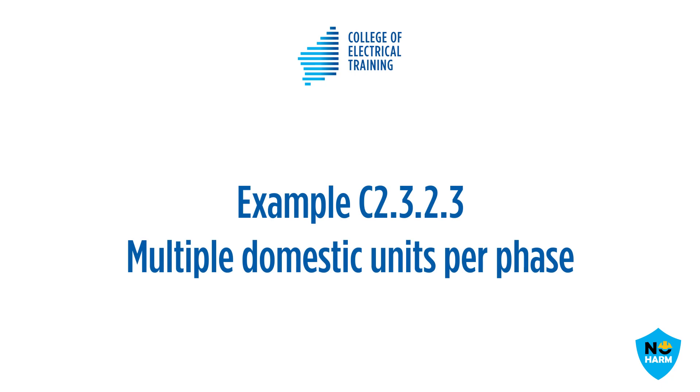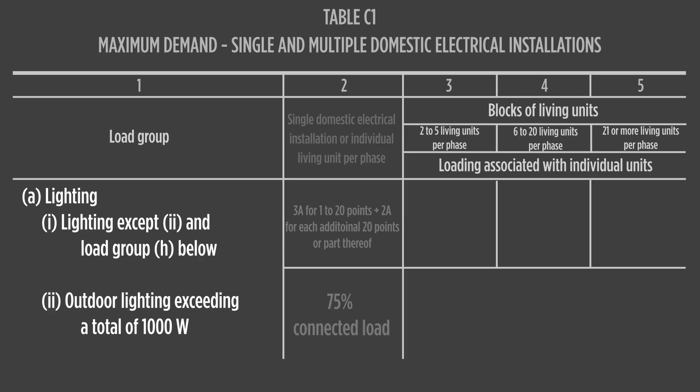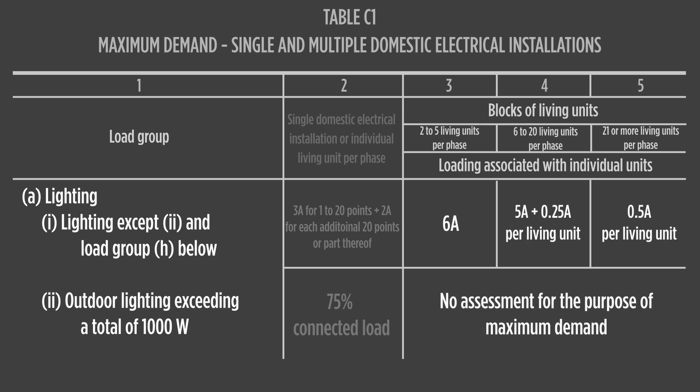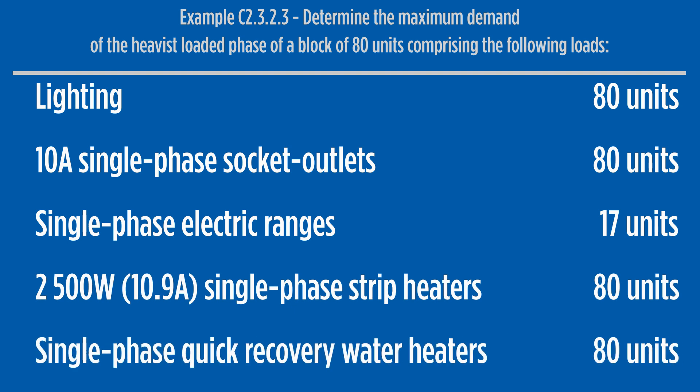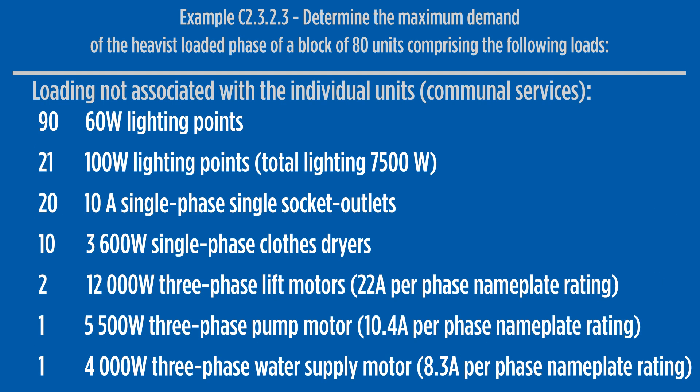Example C2.3.2.3. In this example, multiple living units per phase are examined. This activity introduces us to columns 3 to 5 of table C1 for calculation purposes. Columns 3 to 5 apply loading for a number of living units per phase. This scenario introduces us to communal light, power and equipment calculations not associated with individual living units, which will be discussed as we proceed.